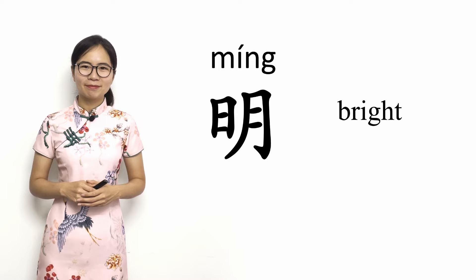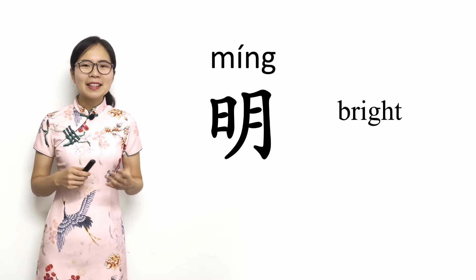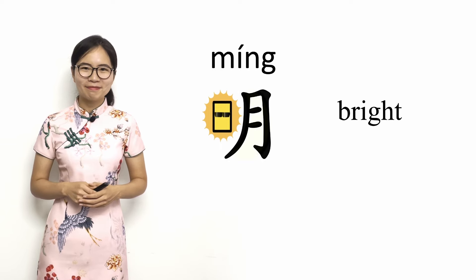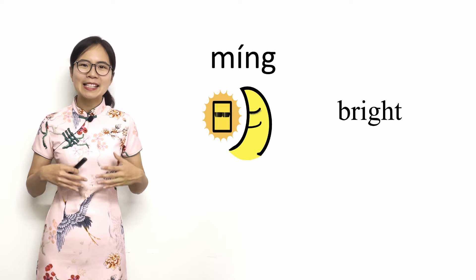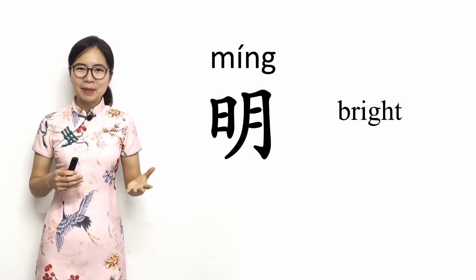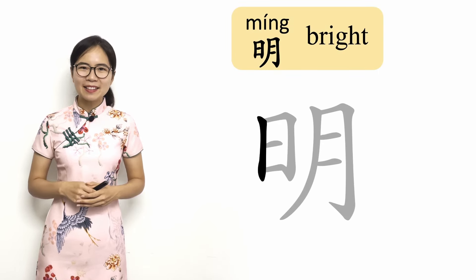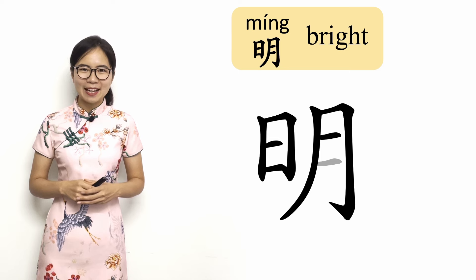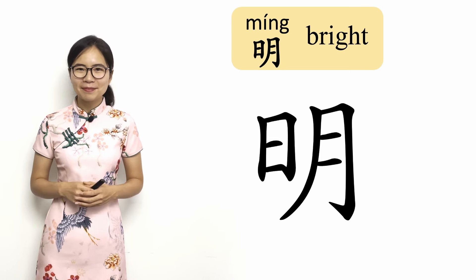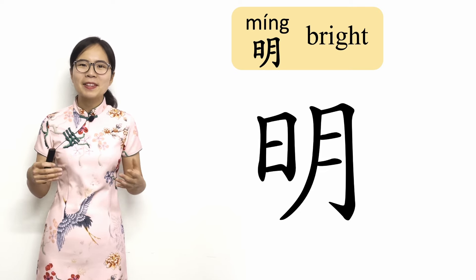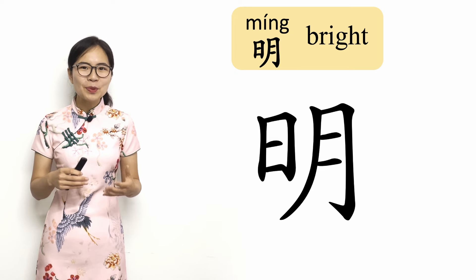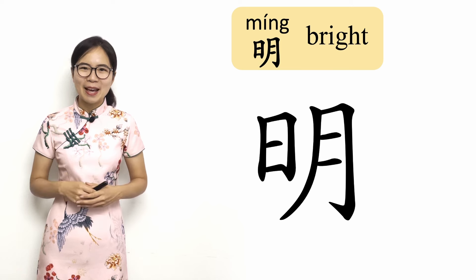The next character in this lesson is 明, which means bright. 明. This character is the combination of the characters for 日 (sun) and 月 (moon), because the sun and the moon are the two brightest objects in the sky. To write the 明 character, first write the 日 or sun character on the left side, then write the 月 or moon character on the right side. Chinese characters are generally written so that they all take up the same amount of space. Here, the character for 日 or sun is smaller, and the character for 月 or moon is more narrow so that they fit into the space of a single character.